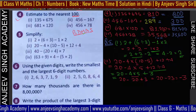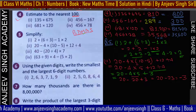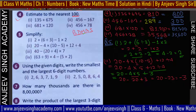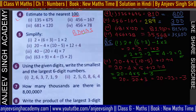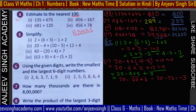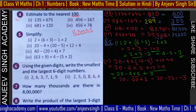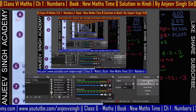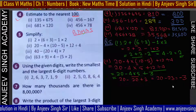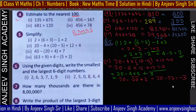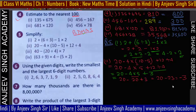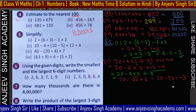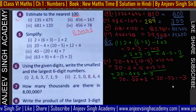Addition पहले: 20 minus 20 = 0, plus 3 = 3? — रुको, 4×5 = 20, 20 minus 23 = minus 3। तो answer minus 3 आ गया। थोड़ी हवा उठ गई थी तो gate का आवाज़ हो रहा था।